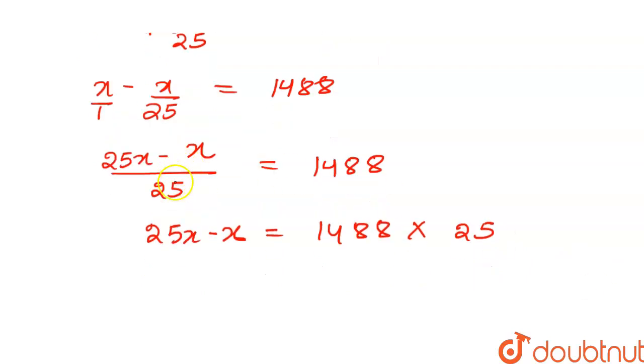So now 25x minus x is equals to 1488 into 25. Because 25 is in division here, so it will be multiplied with 1488 on the right hand side. So 25x minus x, we can see that x is having the same variable on both terms. So 25 minus 1 will be 24x.